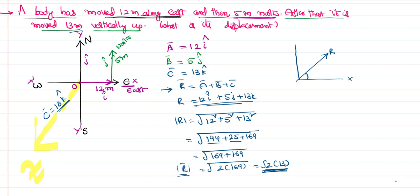r-bar is making some angle alpha with the x-axis. Then you can say cos alpha is rx by r-bar, this is rx. So alpha equals cos inverse of rx by r-bar.